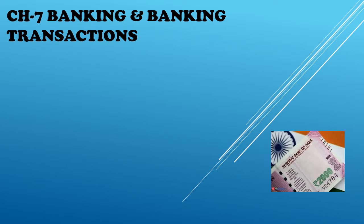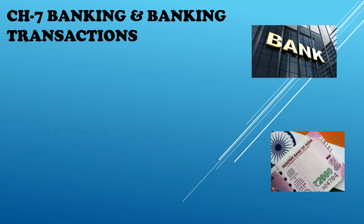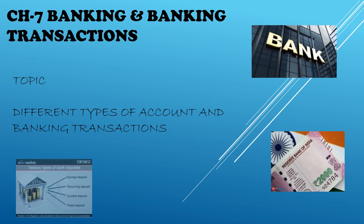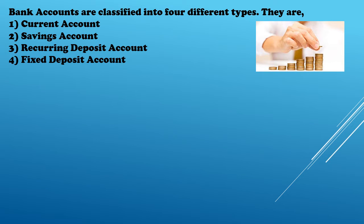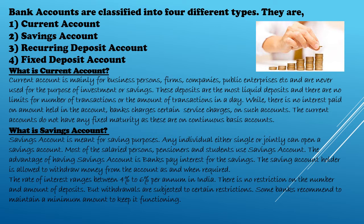Let's start with bank accounts. They are classified into four types: current account, savings account, recurring deposit account, and fixed deposit account. A current account is mainly for business persons, firms, companies, and public enterprises, and is never used for the purpose of investment or savings. These deposits are the most liquid deposits and there are no limits on the number or amount of transactions.